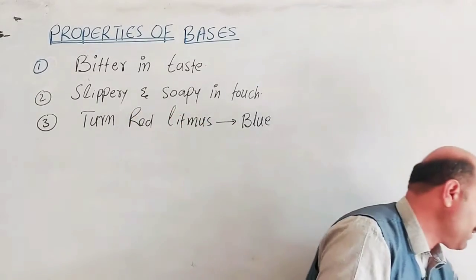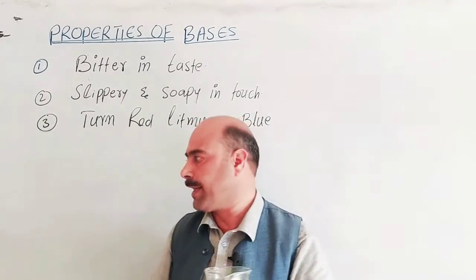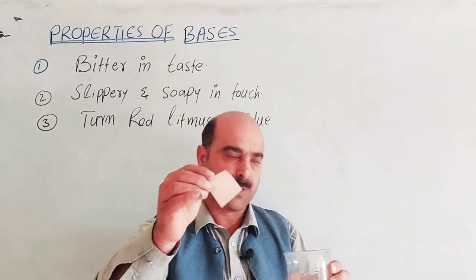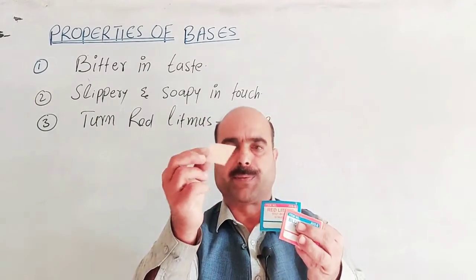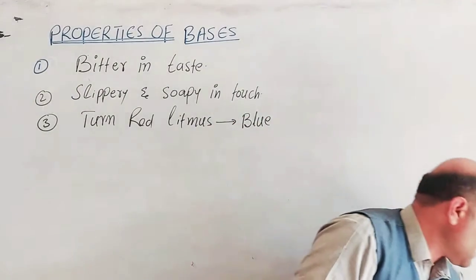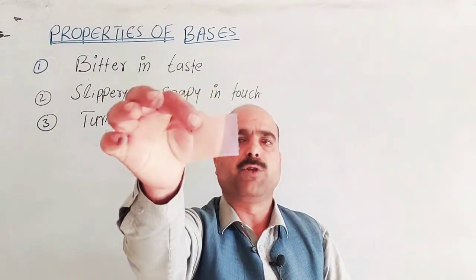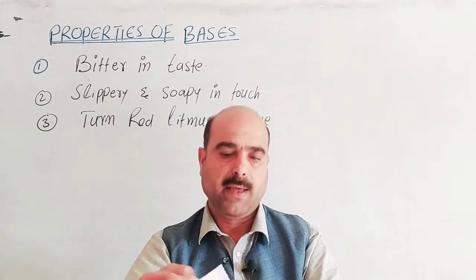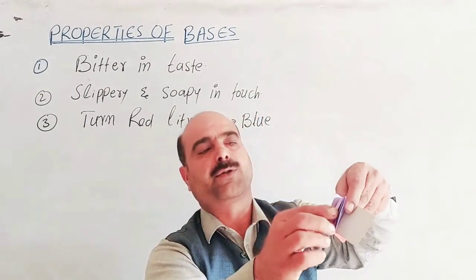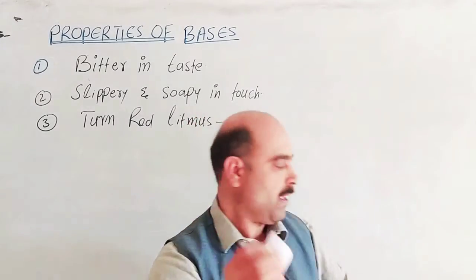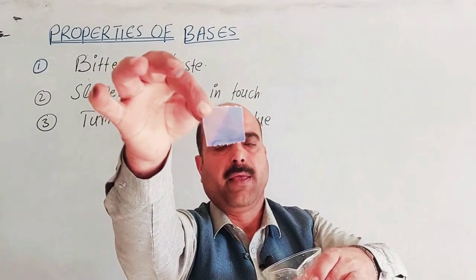Bases turn red litmus blue. If you have a red litmus paper and dip it into a basic solution, it will convert to blue. This is how you can identify a basic solution using litmus paper. Blue litmus paper does not change color in a base — only red litmus turns blue.